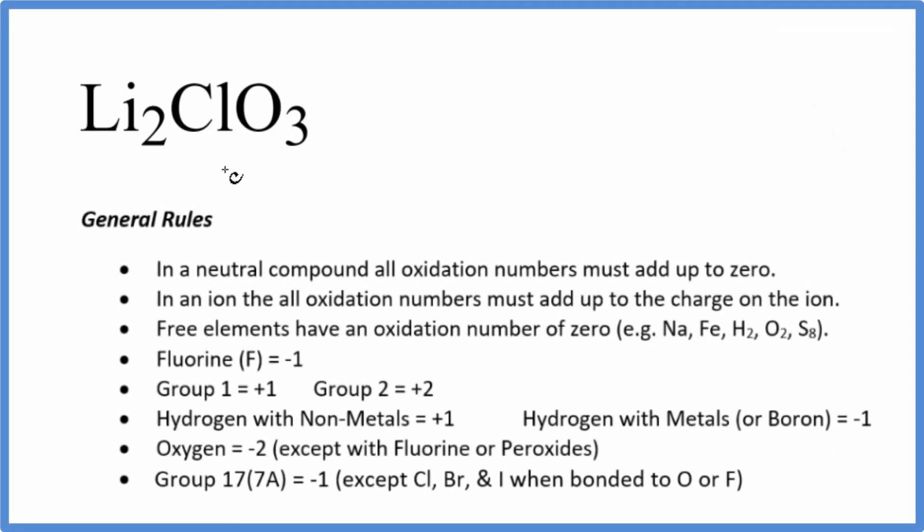In this video, we'll find the oxidation numbers for each element in Li₂ClO₃. So to do this, the first thing we need to realize is there's no negative or positive sign after the compound. Because of that, it's a neutral compound. All the oxidation numbers add up to zero.